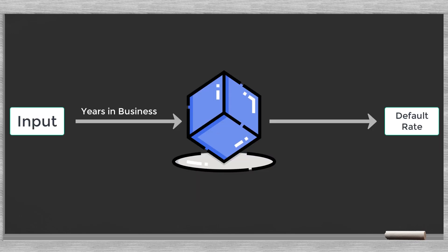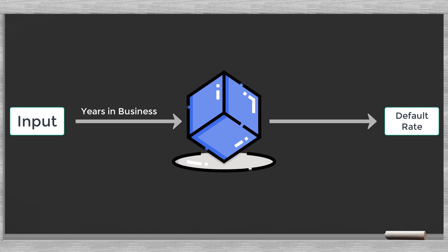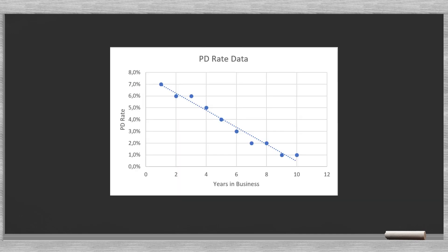It would be great if we could create a simple model that takes as an input the years in business and returns the default rate. We start with plotting a scatter chart in Excel with along the x-axis the input data, in our case the years, and along the y-axis the output, in our case the PD rates.